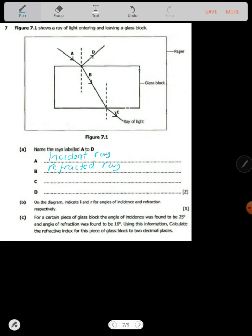Then look at C. C, it's coming out of the block, right? We call it an emergent ray.